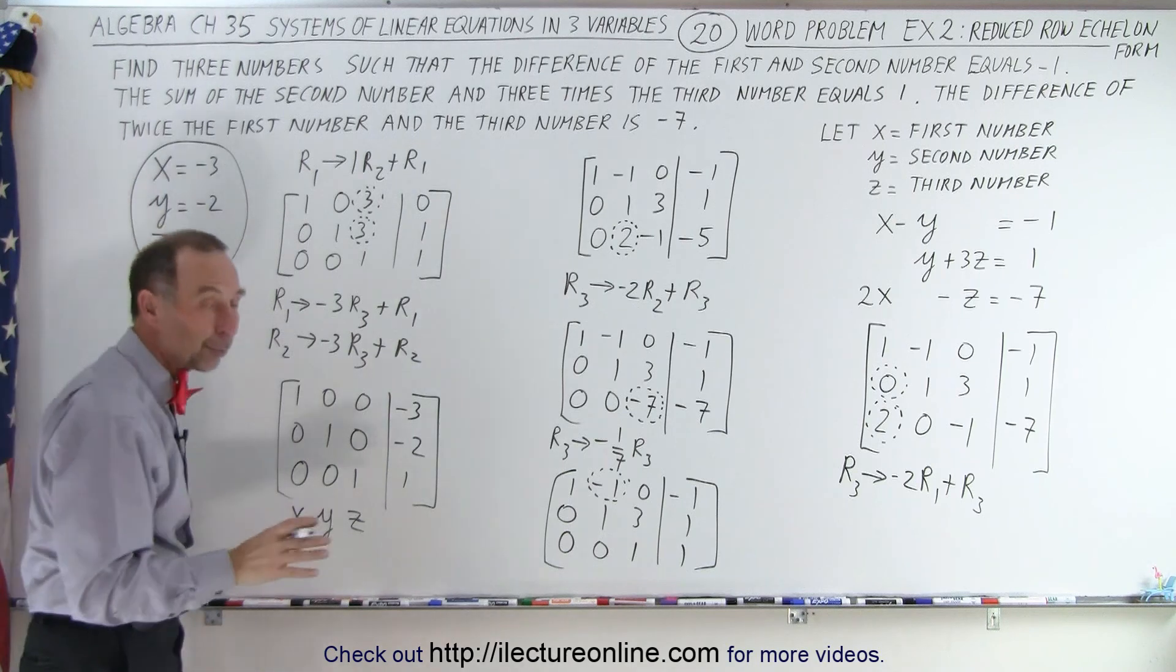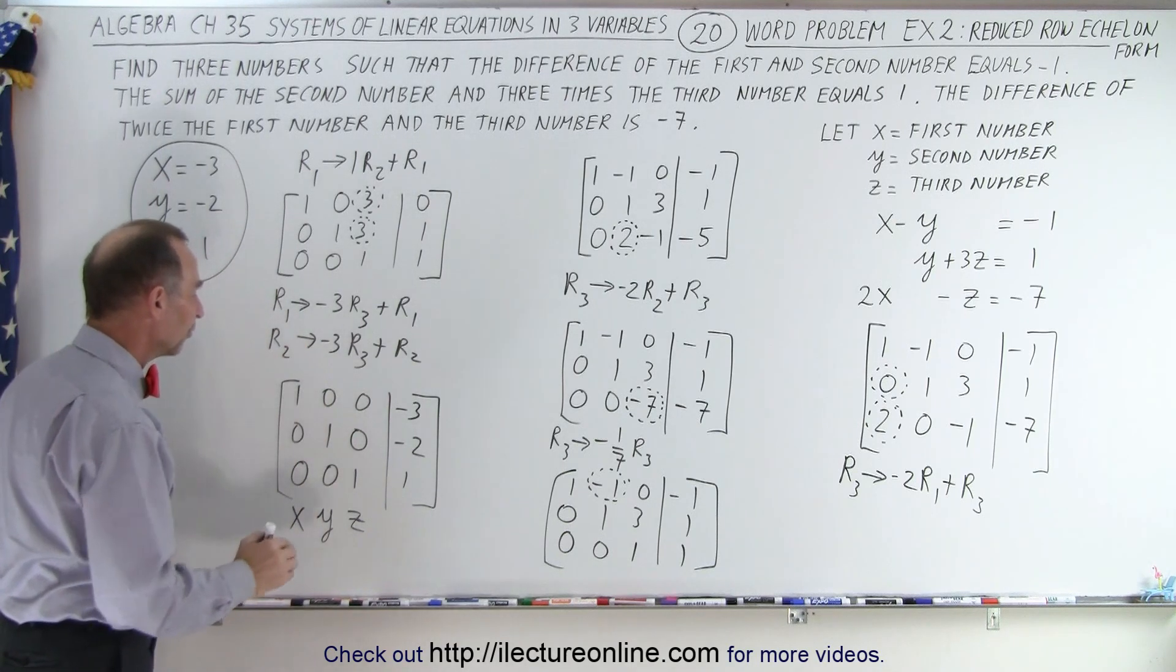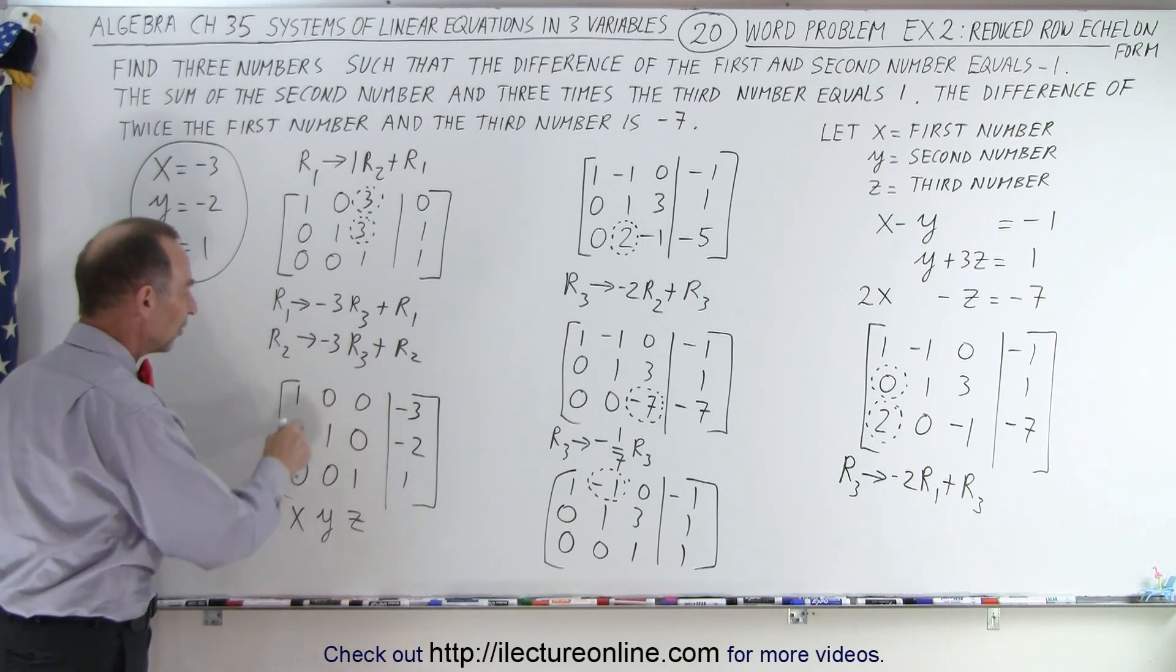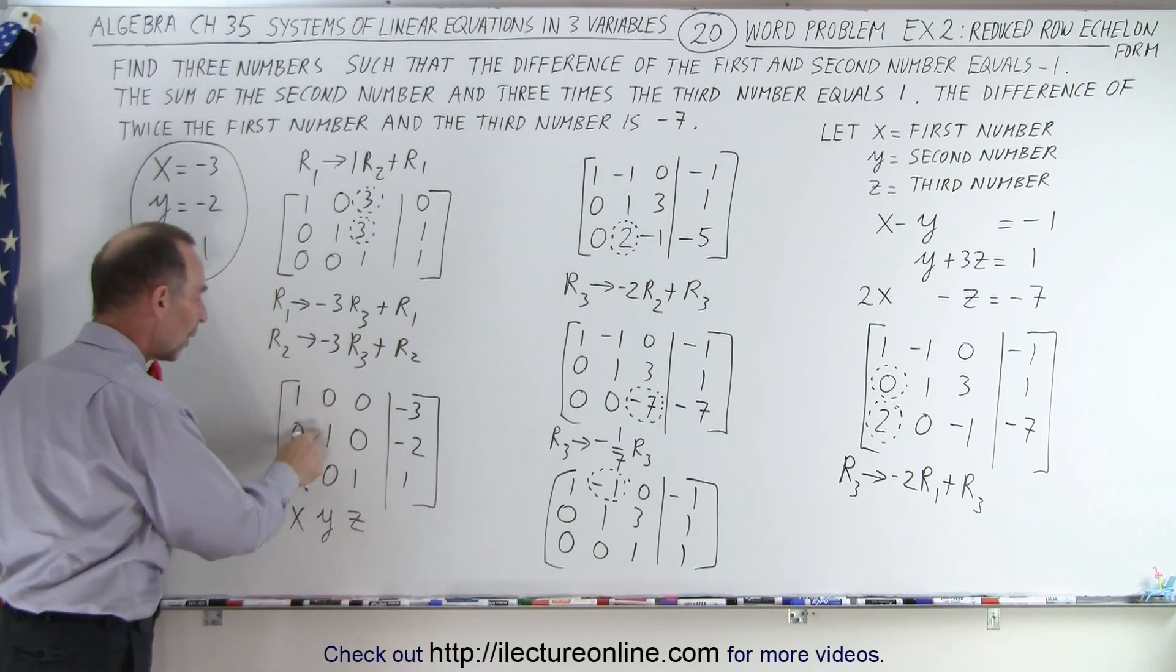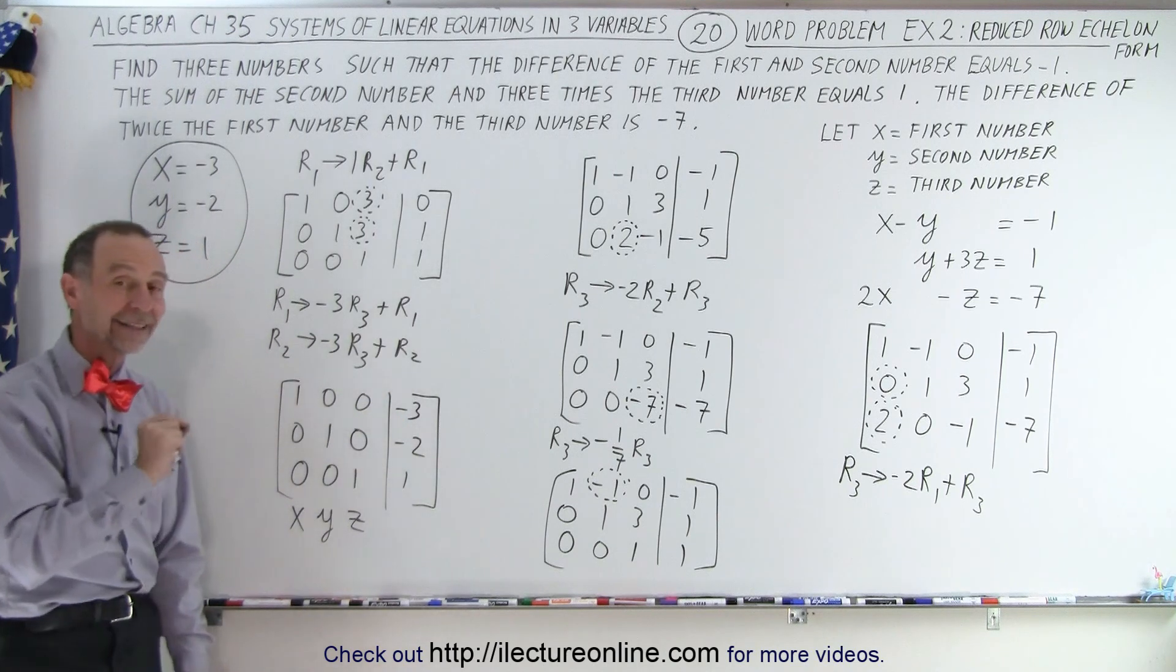And notice how wonderful that works. Once you get it all the way down to the reduced row echelon form, with ones across diagonals and zeros everywhere else, you simply can read x, y, and z in terms of negative three, negative two, and one. And that is how it's done, using the reduced row echelon form.